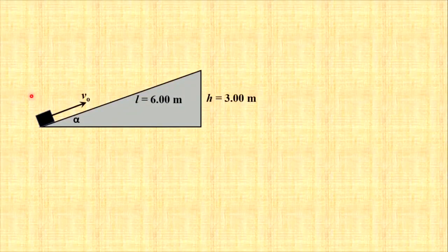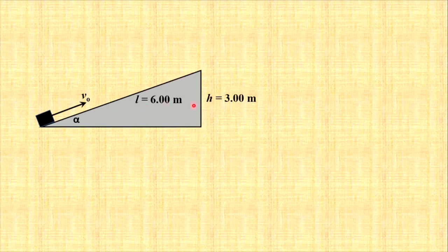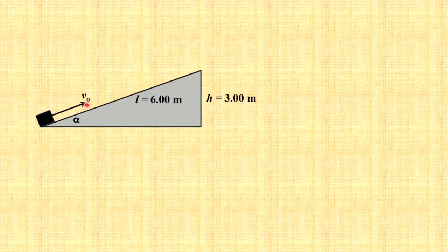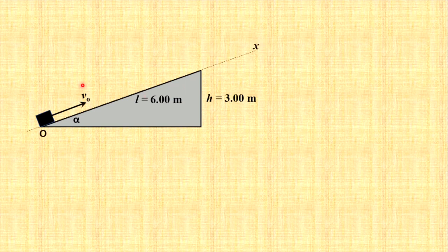Now he returned to the initial problem, so we have incline with given parameters. We have a block which is at initial position at the bottom of the incline, and the initial velocity v₀.